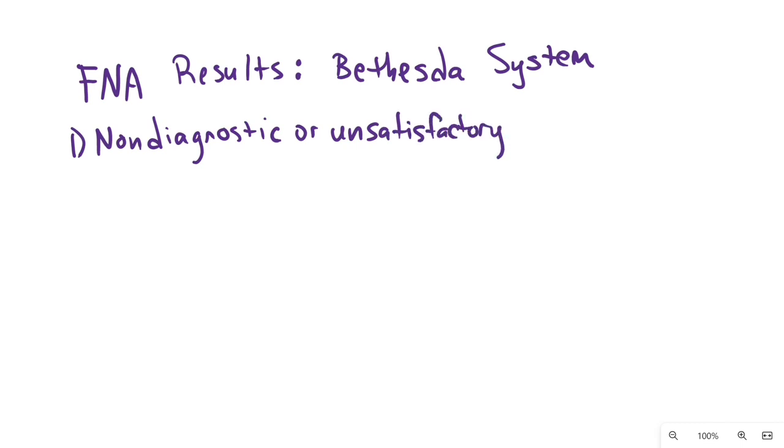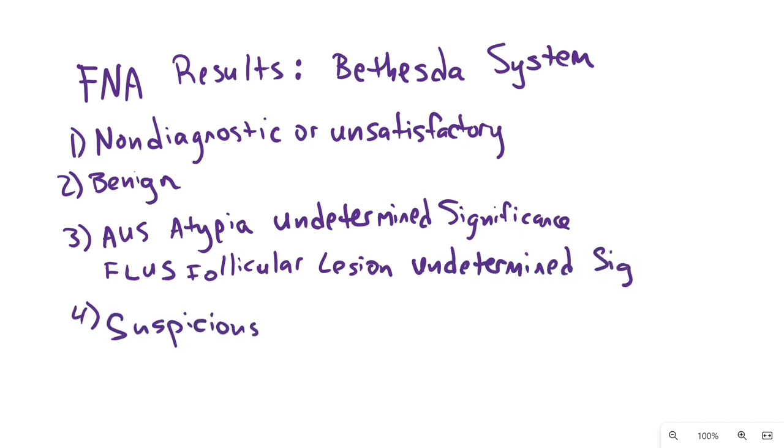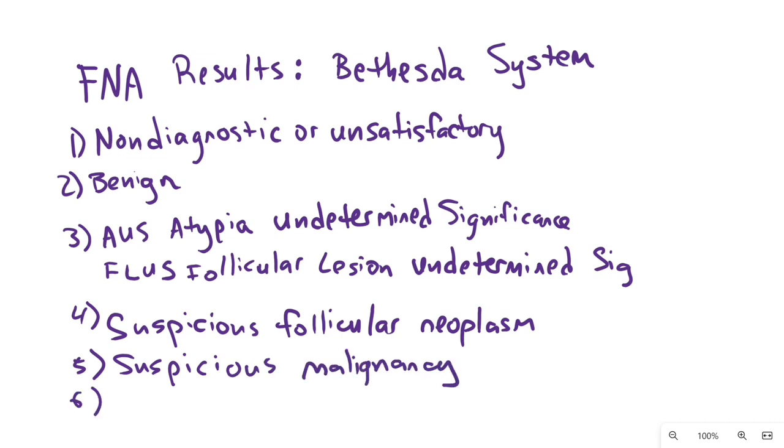One is non-diagnostic or unsatisfactory. Two is benign. Three is AUS, which is atypia of undetermined significance, or FLUS, which is follicular lesion of undetermined significance. Four is suspicious for follicular neoplasm. Five is suspicious for malignancy. And six is malignant.